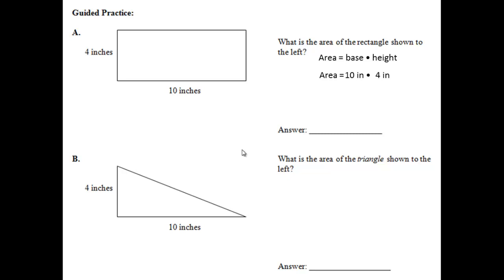Hopefully you included the units — it is 10 inches. And then we are going to multiply that by the height, which is 4 inches. When we do this multiplication, we are multiplying 10 times 4, which is 40. And then inches times inches, which makes inches squared or square inches. So the area of this rectangle is 40 square inches.